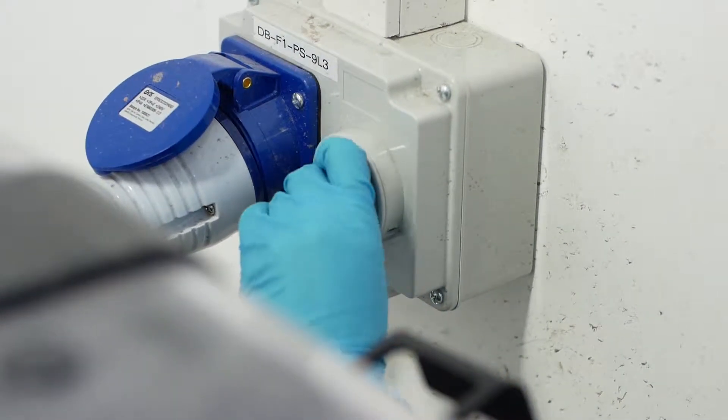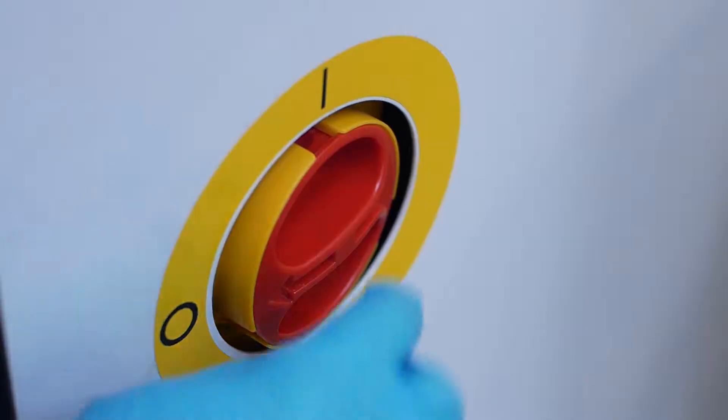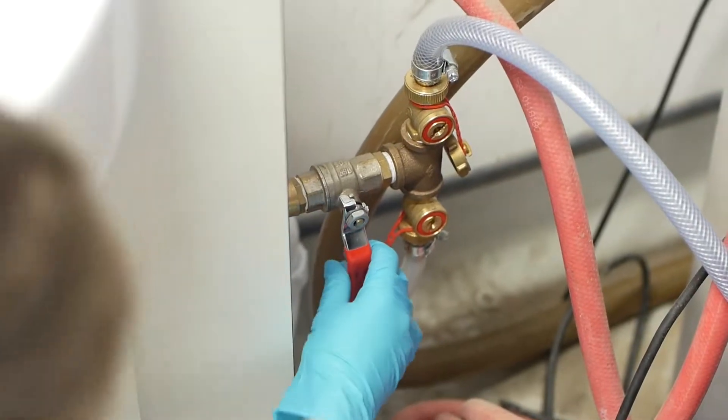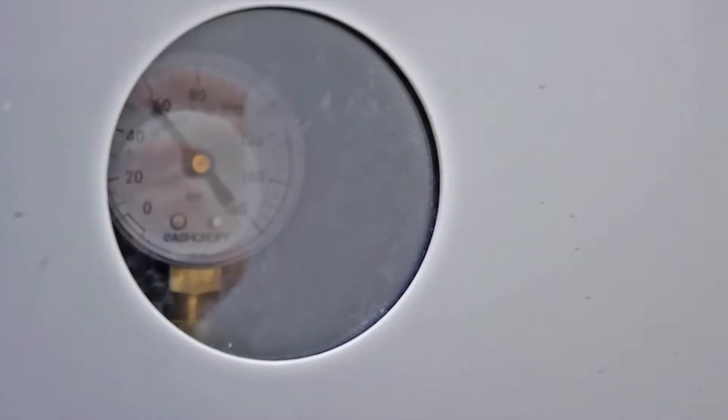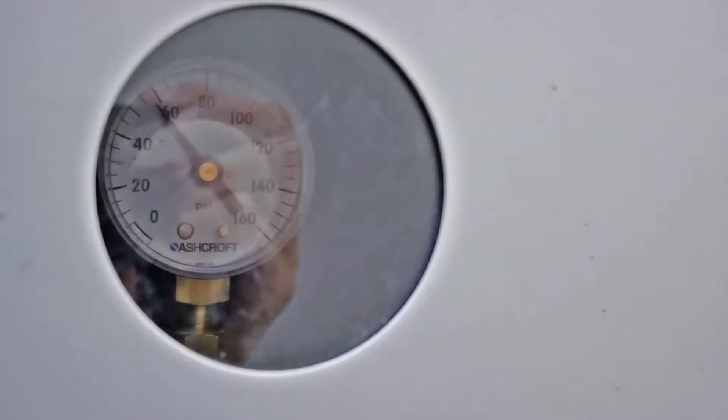To use the machine, first switch on the water and power supply. The machine is switched on when the light is illuminated. Now check that the water supply is on and that the pressure reads between 45 to 80 psi on the pump dial.